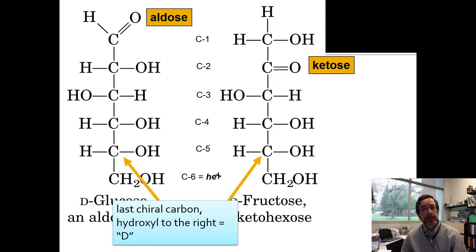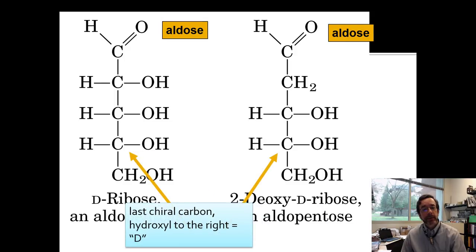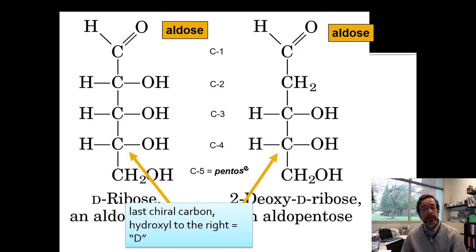If we number the carbons from the reactive end to the non-reactive end, we end up with one, two, three, four, five, six. Both glucose and fructose are hexoses. For pentoses, this is ribose — both ribose and deoxyribose are aldoses and D sugars because the last chiral carbon is to the right. Counting down from the reactive end, they are both pentoses.